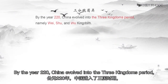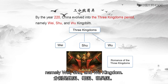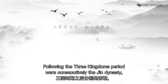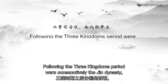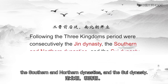By the year 220, China evolved into the Three Kingdoms period, namely the Wei, Shu, and Wu Kingdoms. Following the Three Kingdoms period were consecutively the Jin Dynasty, the Southern and Northern Dynasties, and the Sui Dynasty.